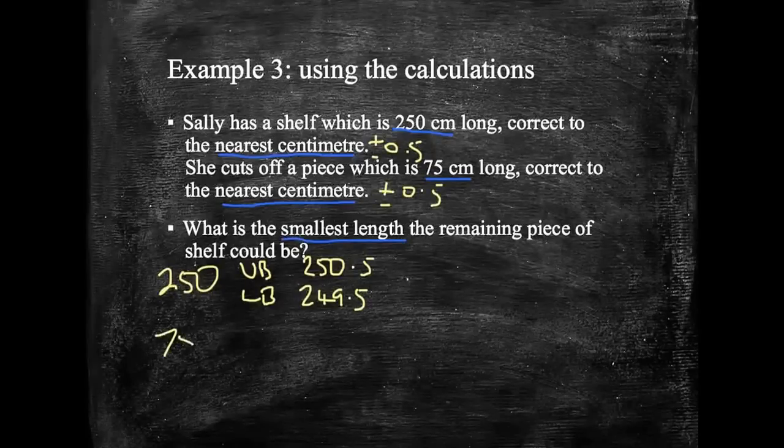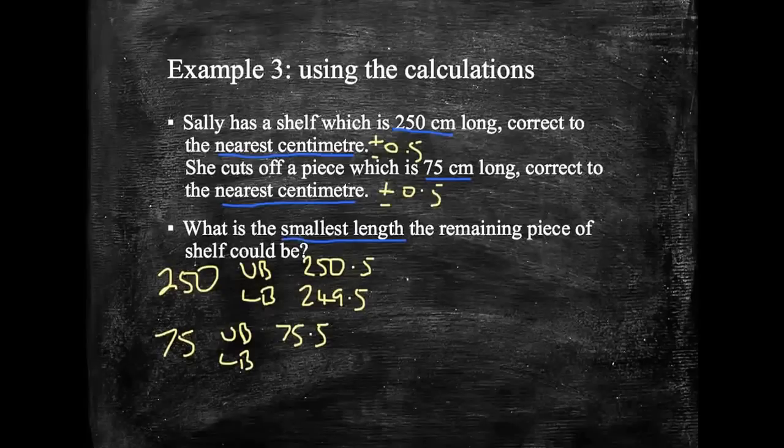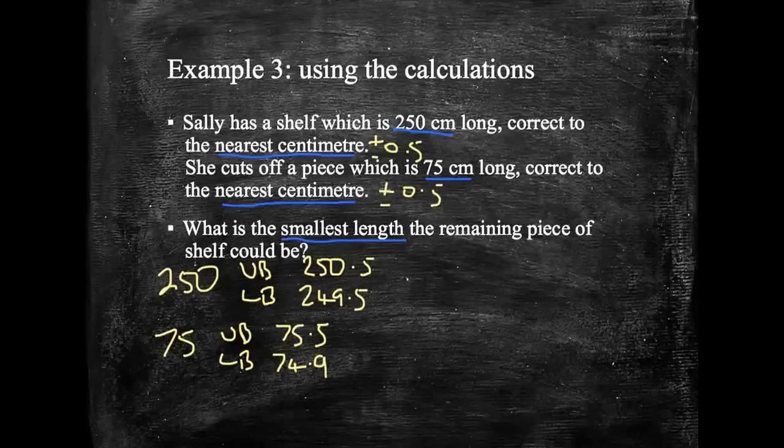And for the other piece, 75. The upper bound would be 75 plus 0.5. And the lower bound, 75 minus 0.5, so 74.5. Now, the calculations I'm looking for is the smallest length the remaining piece. So let's have a think. If I'm not sure what to do, what I would say to you in an exam is do every single calculation.